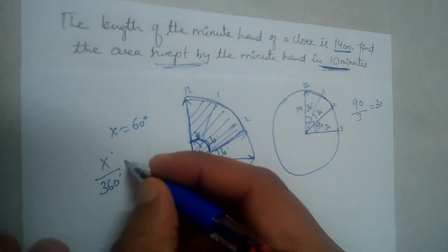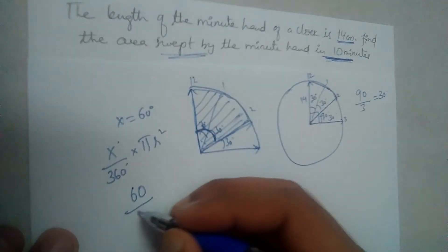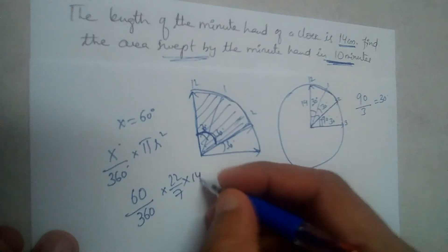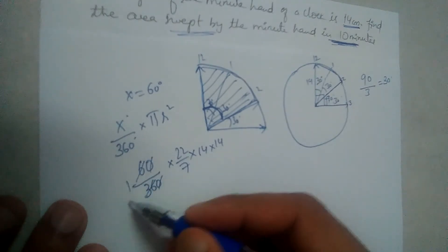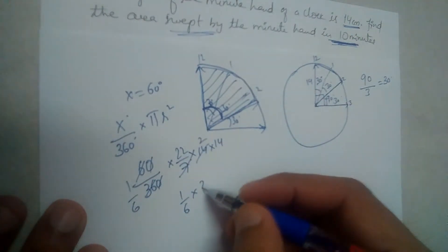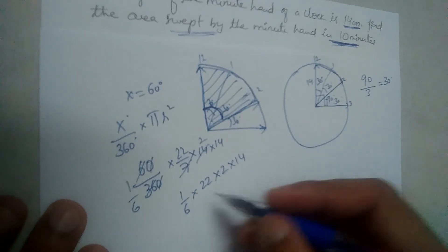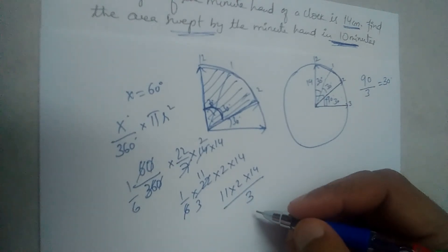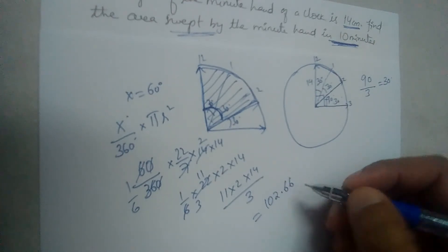We know the area formula for a sector: (x/360) × π r². Here x is 60 degrees, so it's 60/360 into π which is 22/7, and the radius is 14, so 14 squared equals 14 into 14. Simplifying: 60/360 reduces to 1/6, and after cancellation we get 11 × 2 × 14 divided by 3, which gives approximately 102.66.